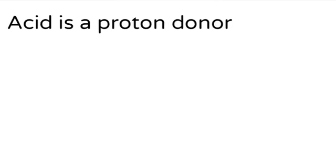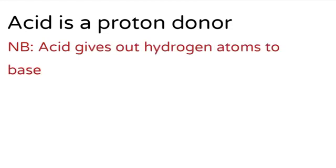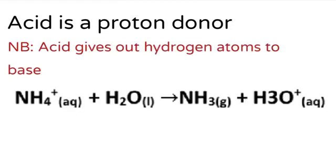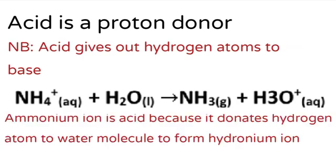To start with, an acid is a proton donor. When we say a proton donor, we mean it gives out a hydrogen atom to a base. For example, look at this equation: ammonium ion plus water molecule gives you ammonia plus hydronium ion. In this equation, ammonium ion is the acid, because it donates a hydrogen atom to the water molecule to form hydronium ion.